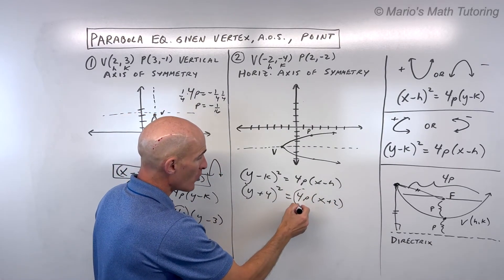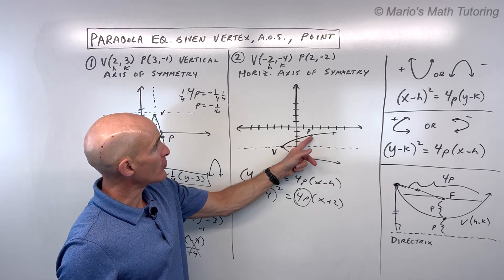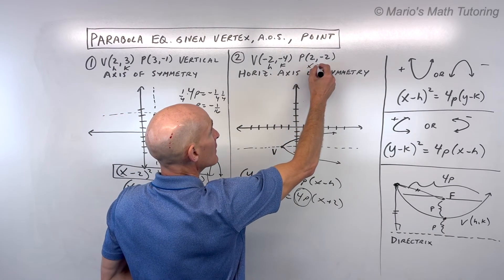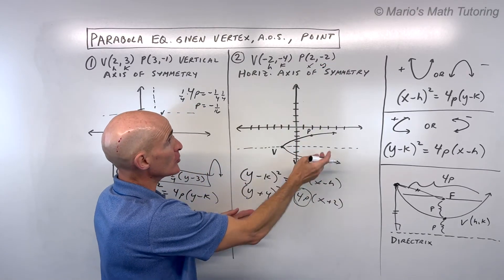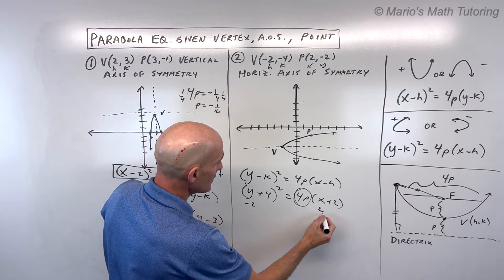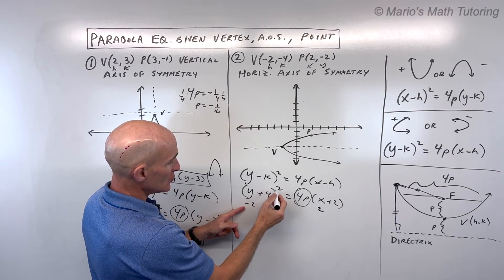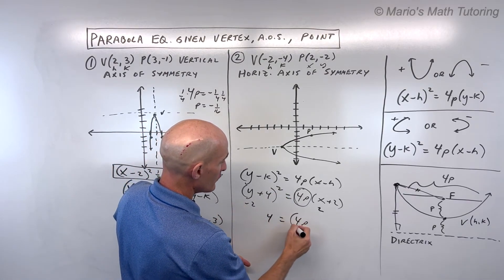Okay, our goal is to figure out what this quantity is right here, this 4P. So we know that there's a point that's on our graph, if we plug this in for x and y, that's going to make this equation true. So if I plug in 2 for x and negative 2 for y, so let's see what that gives us here. That gives us negative 2 plus 4 is 2, 2 squared is 4,